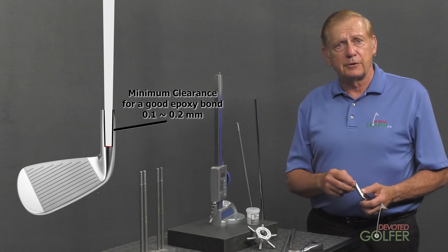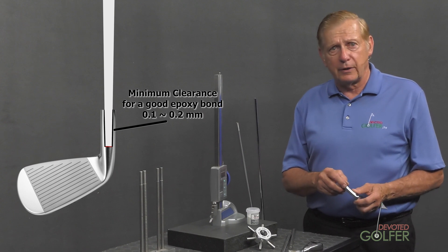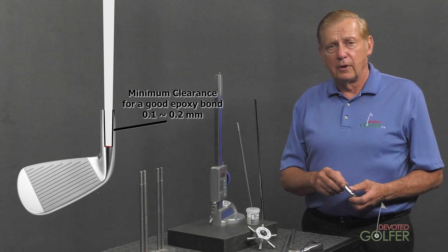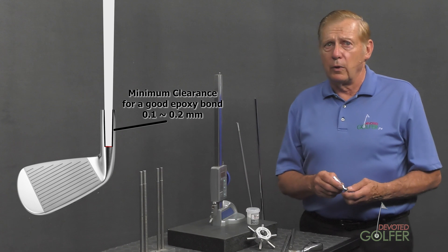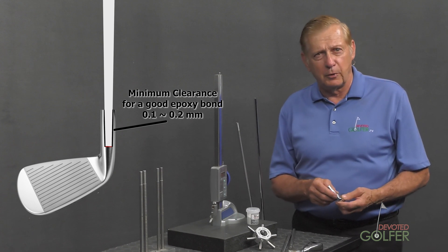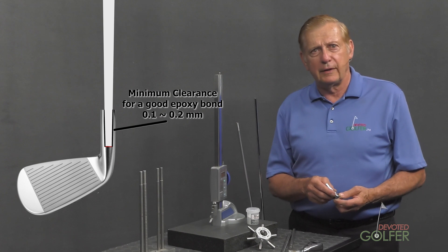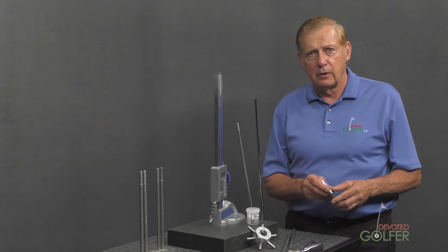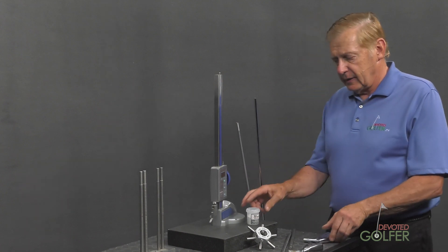If the gap is too large, the epoxy will eventually break loose and the head will come off. So 0.1 to 0.2 millimeters - that's a very small number. How do you create that precise a gap? Well, there's a simple answer and it's right here.